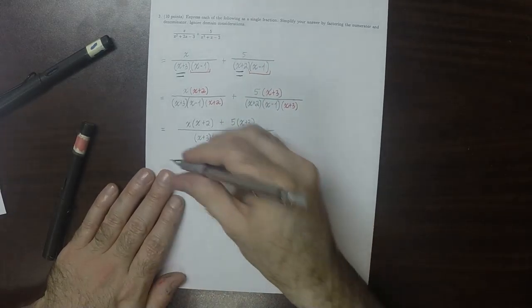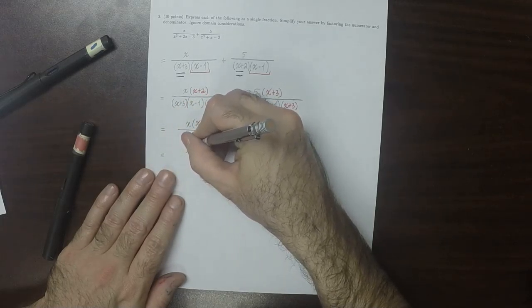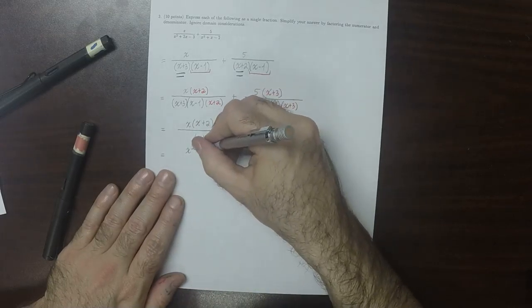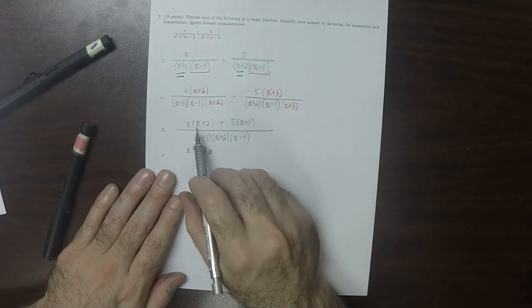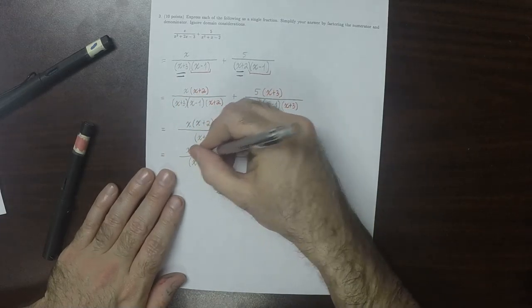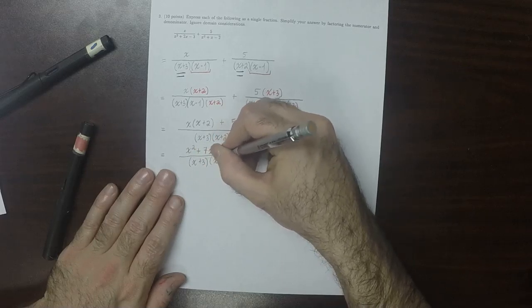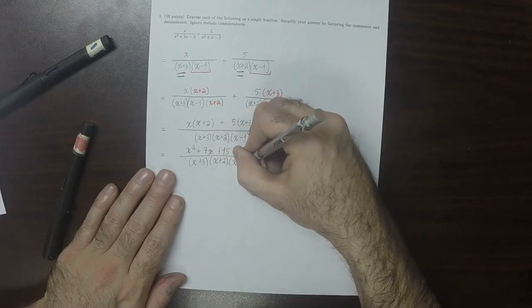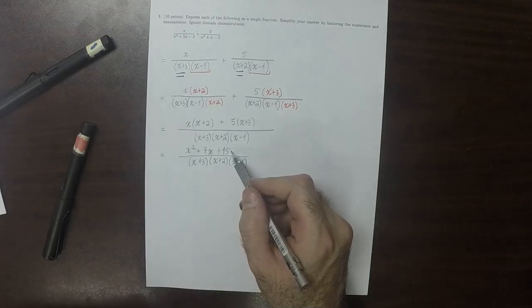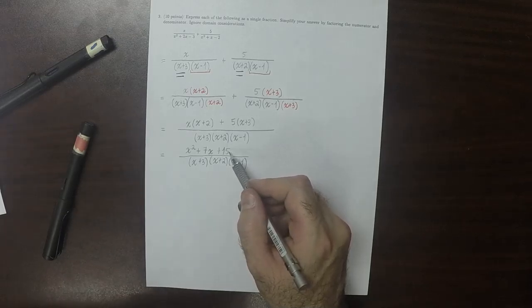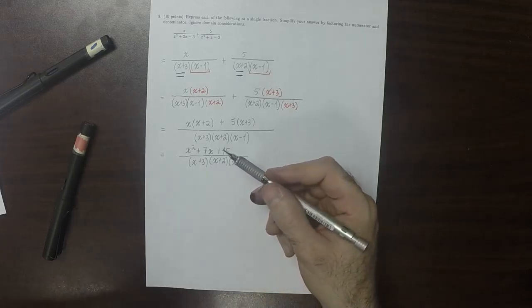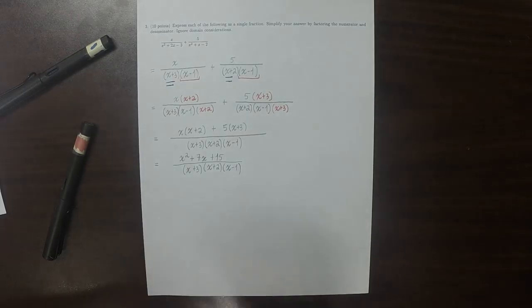And then we can simplify this a little bit. So that would be x squared plus 2x plus 5x is 7x, and then plus 15, over x plus 3 times x plus 2 times x minus 1. And then this does not factor over the integers, because there's no integers whose product is 15 and whose sum is 7. So we won't get any further cancellation. And that's the answer.